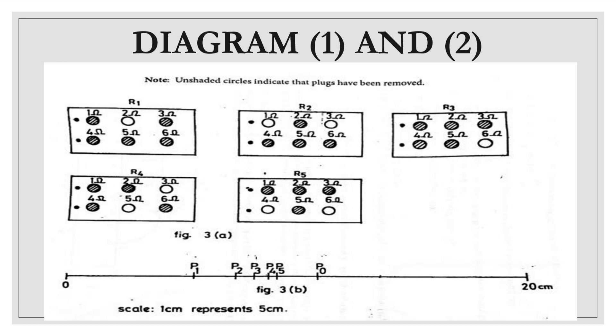Now the length of the potentiometer wire was also measured. Since it is an alternative to practical, what we are going to do is to record the resistance given here. You can see here that the unshaded circles indicate that plugs have been removed. So when we are conducting this experiment in the laboratory we have to remove the plug so that resistance can be taken note of. For R1 the resistance is 2 ohm, so what would be the length on the potentiometer wire where there will be no deflection? That is from 0 to P1, so if you measure it accurately you are going to get 4.8 centimeters.